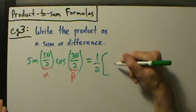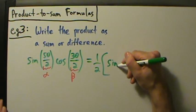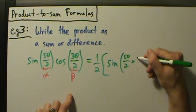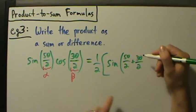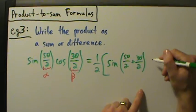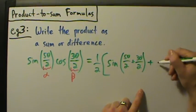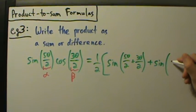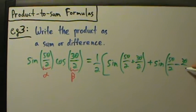Sine of α plus β, so that's 5θ over 2 plus 3θ over 2. That's our α plus β. And then we have plus sine of α minus β, so that's going to be 5θ over 2 minus 3θ over 2.